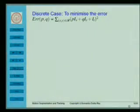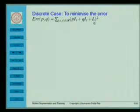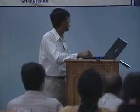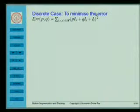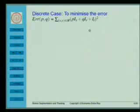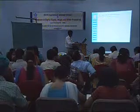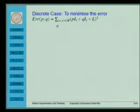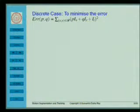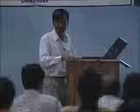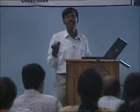In the discrete case, p·Ix + q·Iy + It would ideally equal zero in the continuous case. In the discrete case we typically put it in the form of an optimization problem, because this could be a small quantity — positive or negative. To get rid of that, we put a square and minimize the sum of squares: a minimization of squared error over a region corresponding to the object of interest. This actually raises a chicken-and-egg problem.